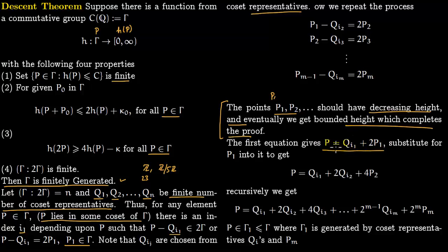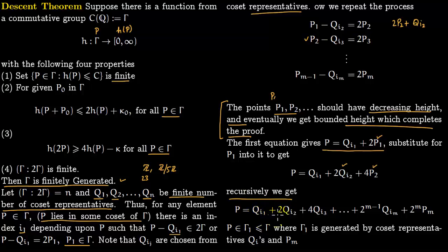Taking the first equation P − q_{i₁} = 2P₁ and substituting P₁ = 2P₂ + q_{i₂} into it gives P = q_{i₁} + 2q_{i₂} + 4P₂. Continuing this substitution recursively yields: P = q_{i₁} + 2q_{i₂} + 4q_{i₃} + … + 2^{m−1}·q_{iₘ} + 2^m·Pₘ, where all q_{iⱼ} are chosen from the coset representatives.